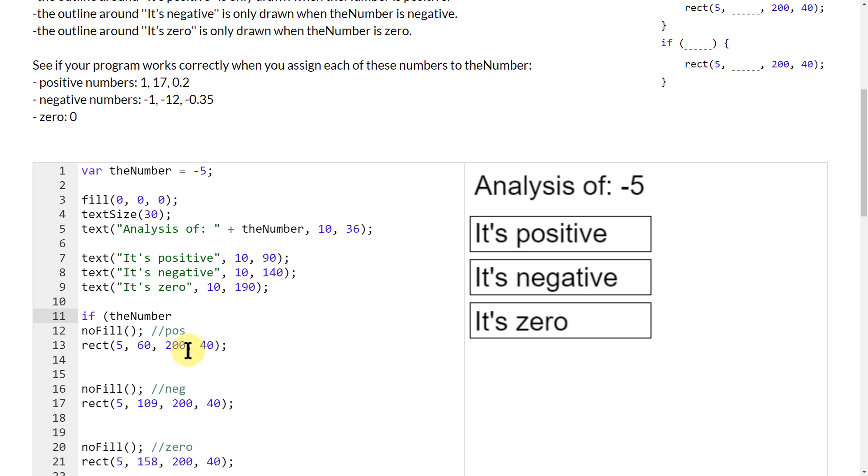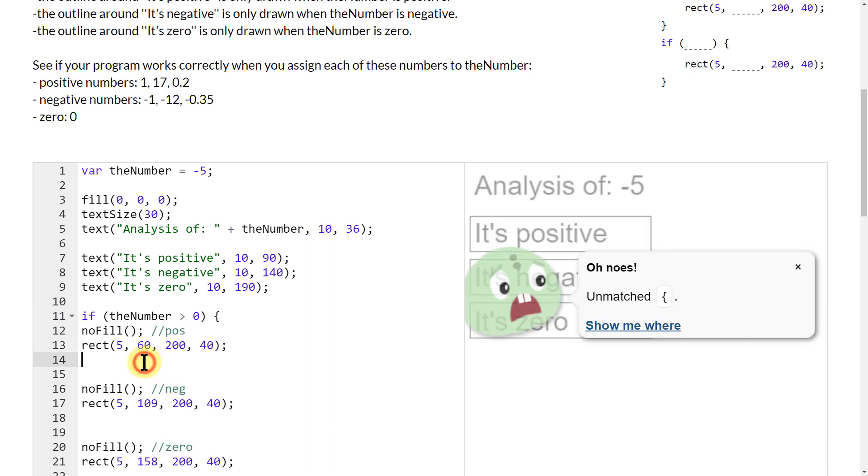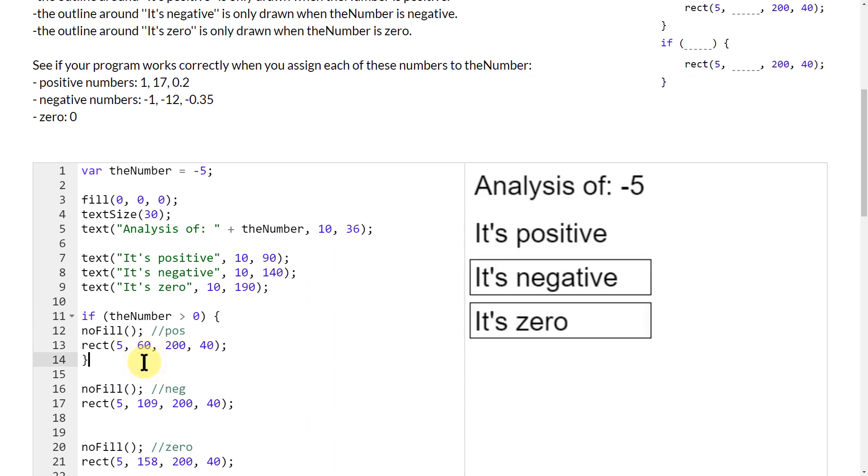We're talking about positive here, so I want it to be greater than. I'm going to use a greater than sign, and then zero. Close my parentheses. I'm going to put a squiggly bracket because that's how if statements work. You have your if and what you want the if to be, and then you put everything in a squiggly bracket. And then close it out.